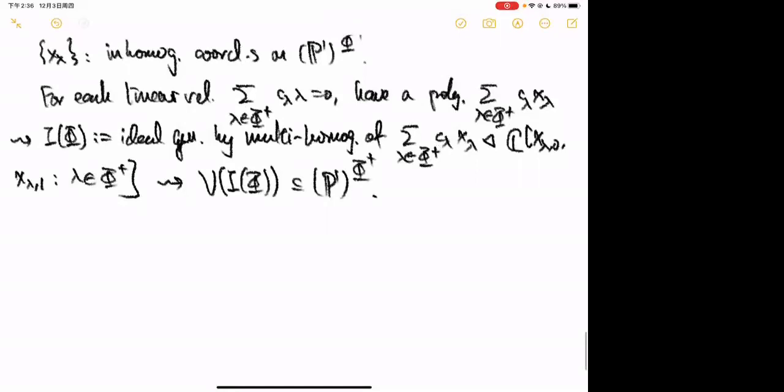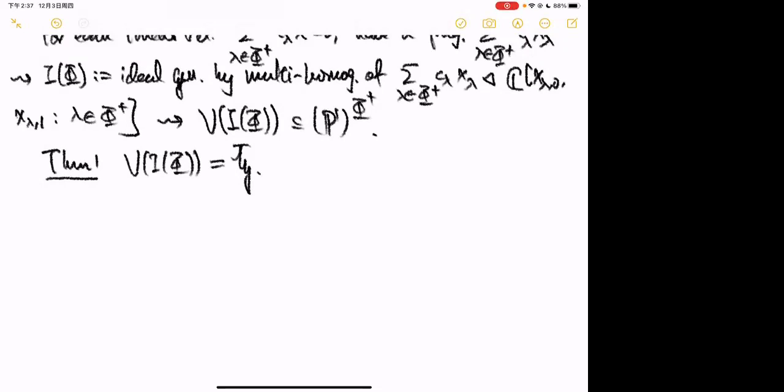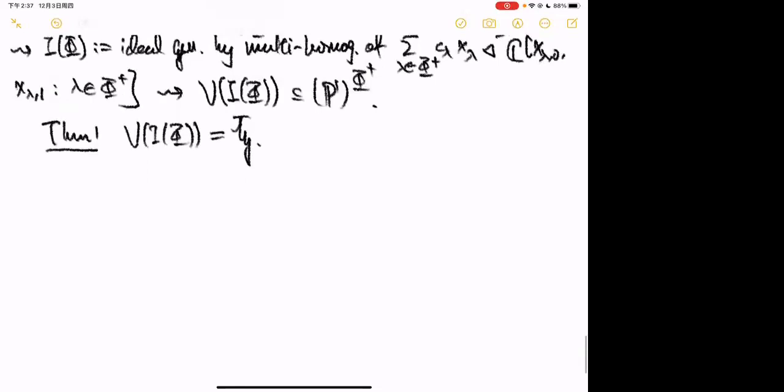It is easy to see that H-bar is contained in the vanishing locus. Theorem 1: the vanishing locus of I(Φ) is exactly H-bar. So to cut out H-bar, you take all linear relations among the positive roots and homogenize them.